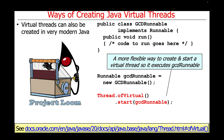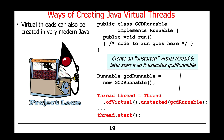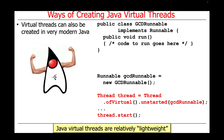A more flexible way to create and start a virtual thread is to use the ofVirtual factory method to create a virtual thread and then call its start method, so that will execute the GCDRunnable object. As with platform threads, you could also create unstarted virtual threads and then later start them. The nice thing about Java virtual threads is they're relatively lightweight, so you can create millions and millions of them without incurring the same overhead required by the underlying operating system kernel.